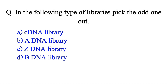In the following types of libraries, find the odd one out. Option A: cDNA library. Option B: ADNA library. Option C: ZDNA library. Option D: B-DNA library. The correct answer is Option A: cDNA library.